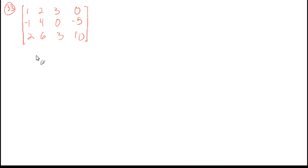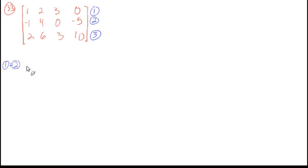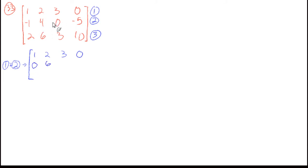Let's get started. I'm going to add row 1 and row 2, and that's going to be my new row 2 — just like we might add equation 1 to equation 2 and replace equation 2. Row 1 stays: 1, 2, 3, 0. Adding rows 1 and 2: we get 0, and 4 plus 2 is 6, and 0 plus 3 is 3, and negative 5 plus 0 is negative 5.